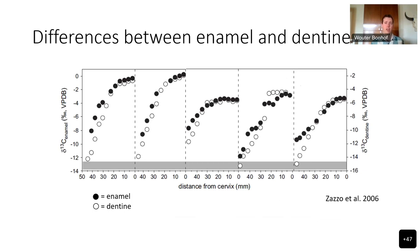There are some minor differences between the strontium isotope ratios of the enamel and the dentine, which can be easily explained by differences in formation and mineralization processes that occur in dentine versus enamel. Such differences have also been observed previously between dentine and enamel of a cow in their carbon values, in an article by Zesso et al. in 2006.